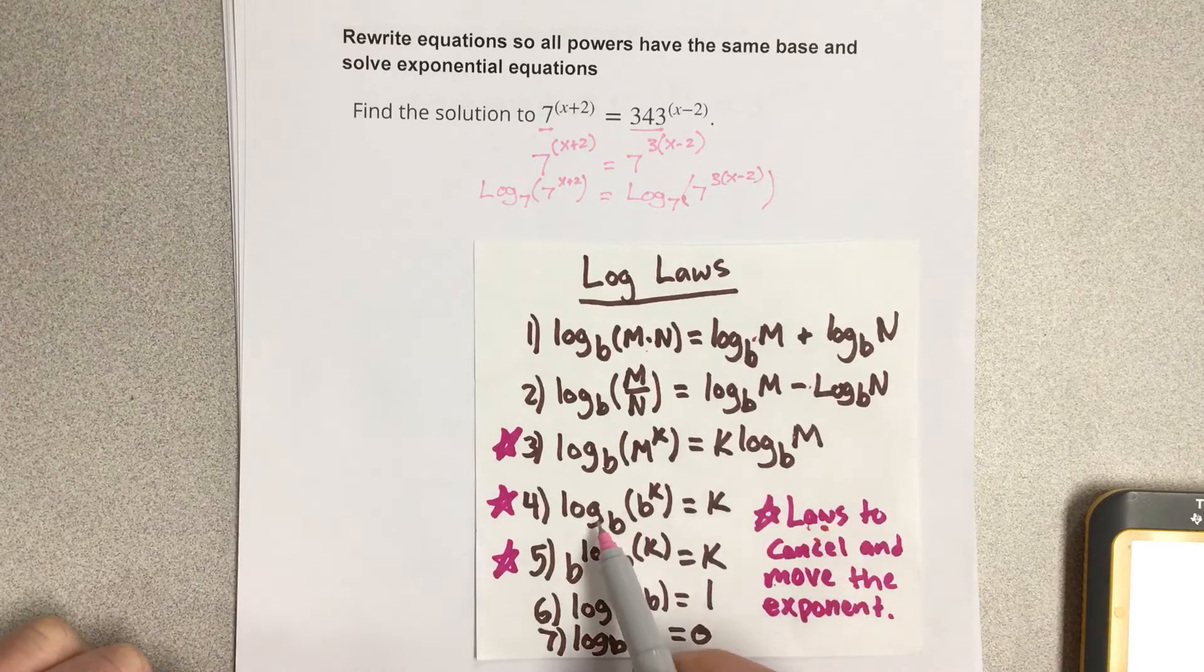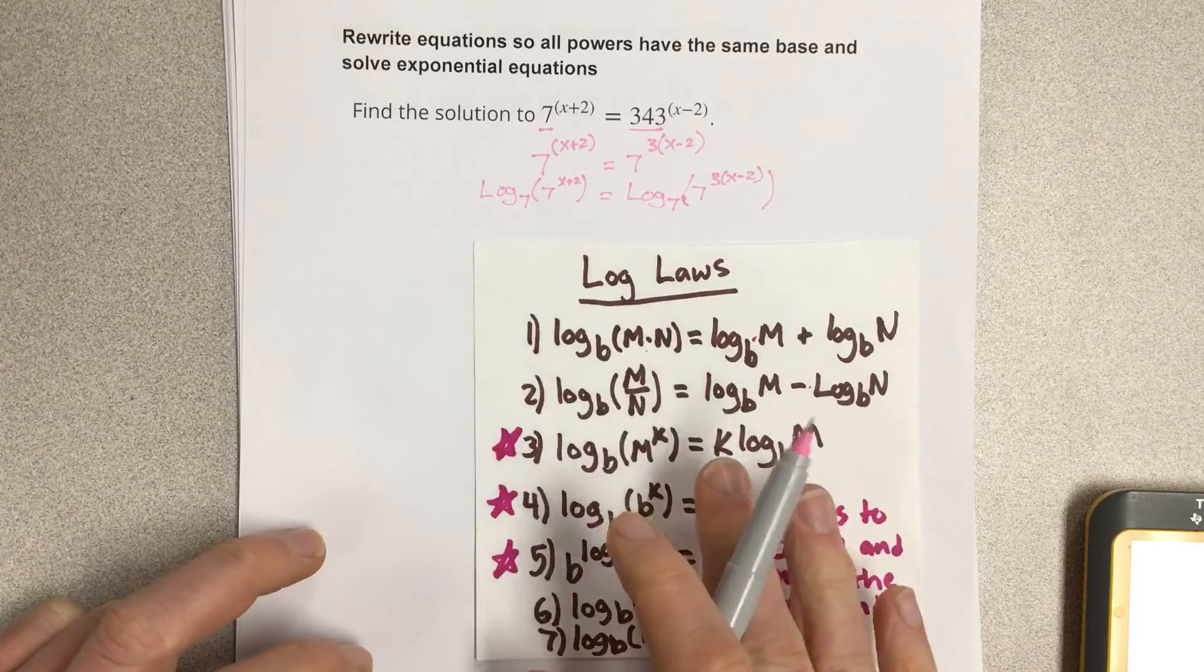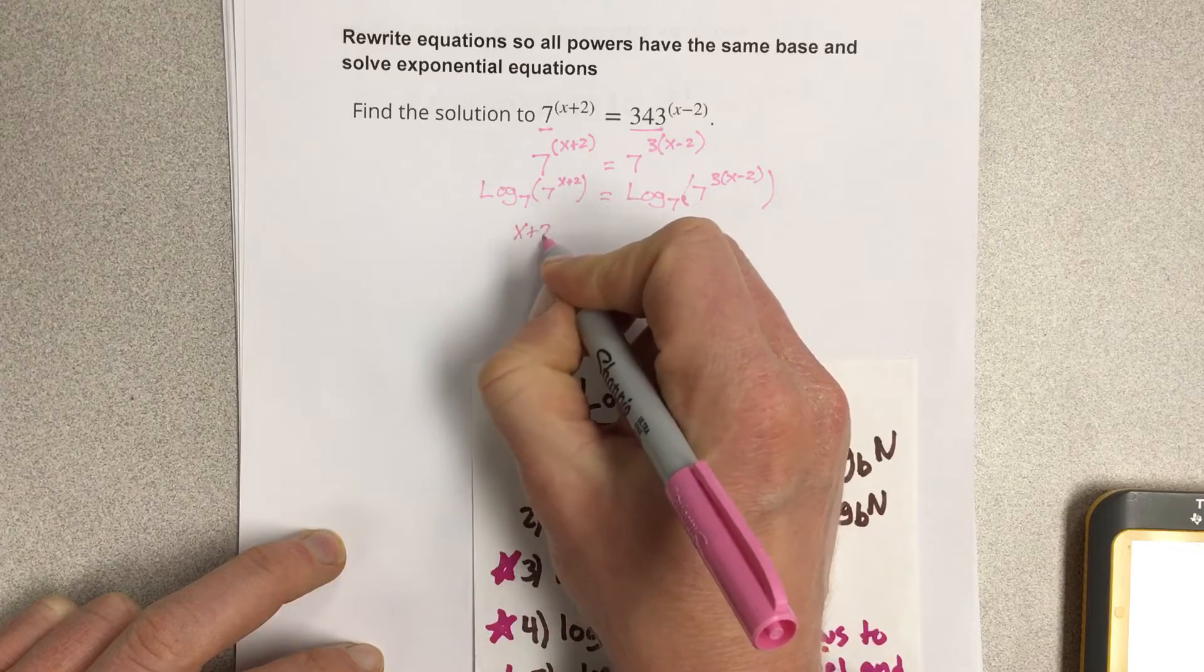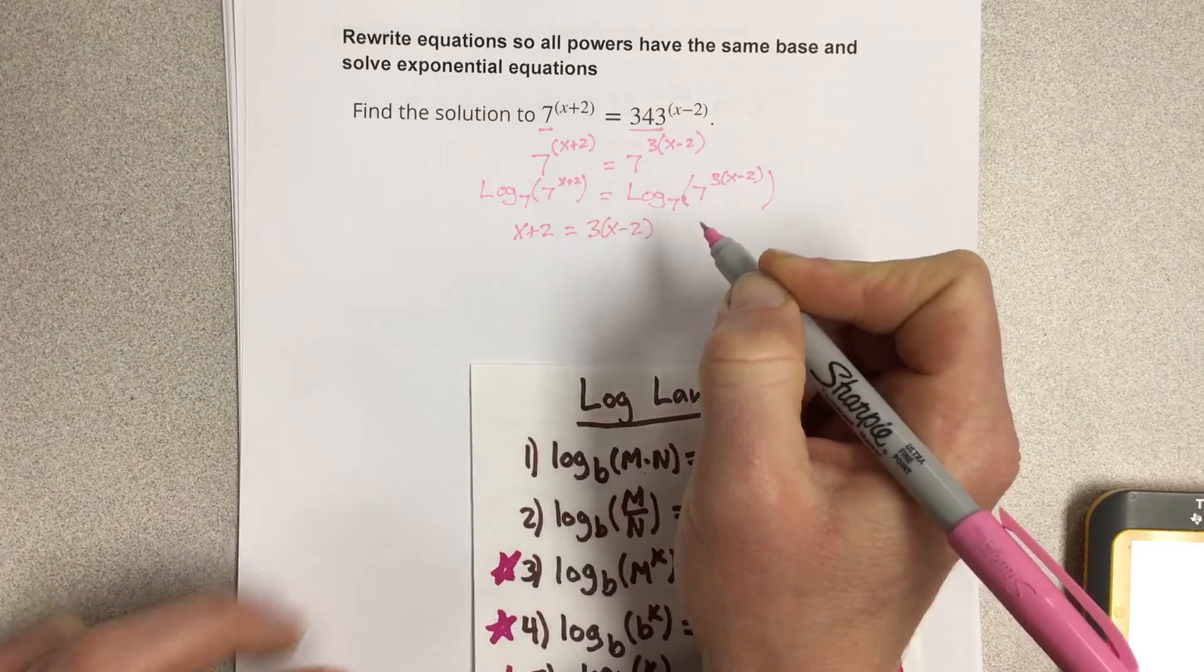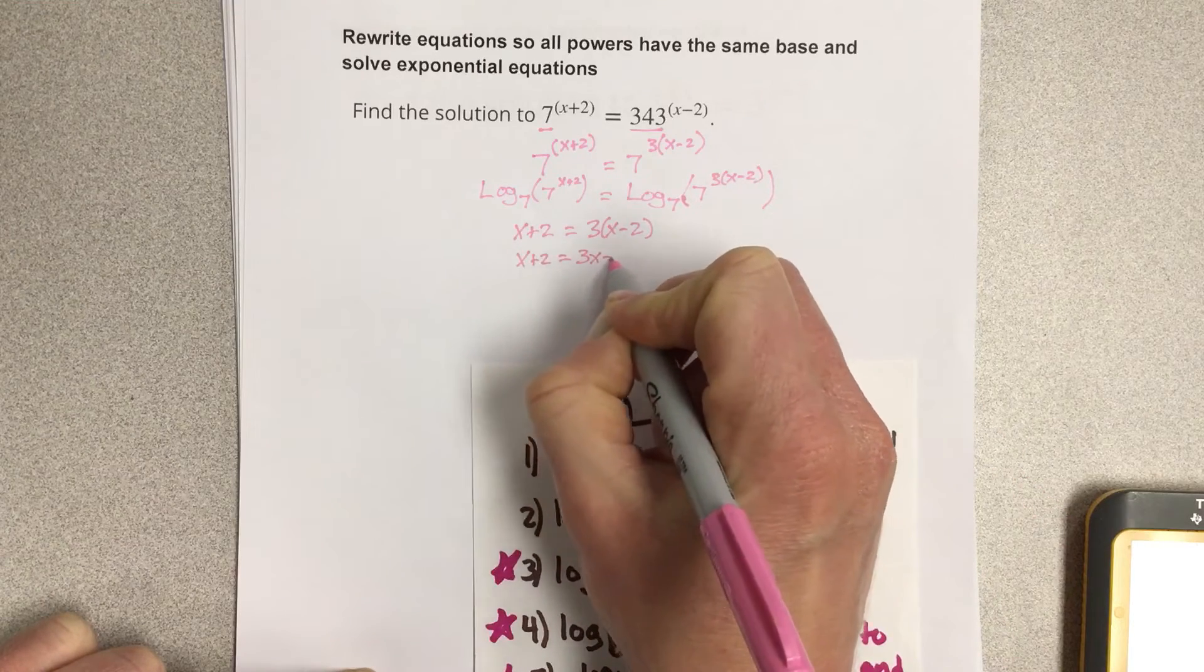You can see that the log base b part is going to cancel, so you're going to end up with x+2 = 3x-2. Distribute the 3: x+2 = 3x-6.